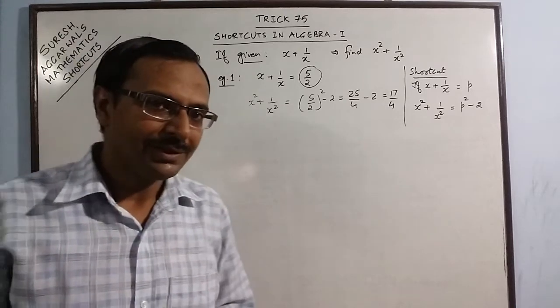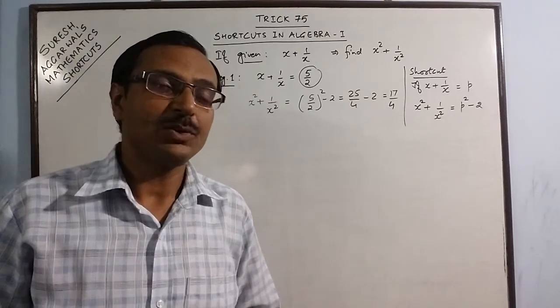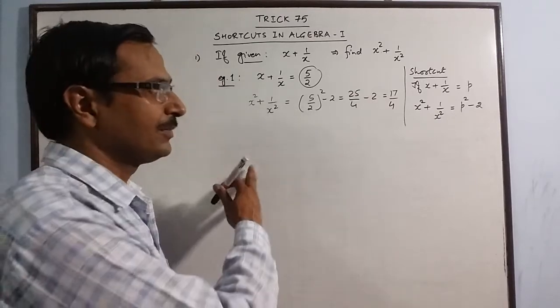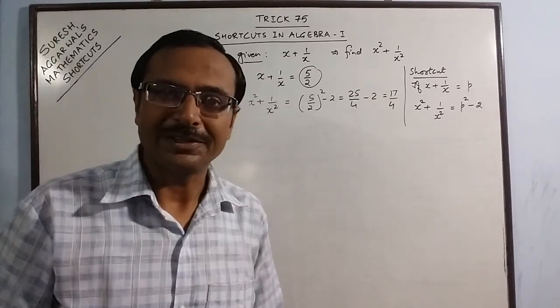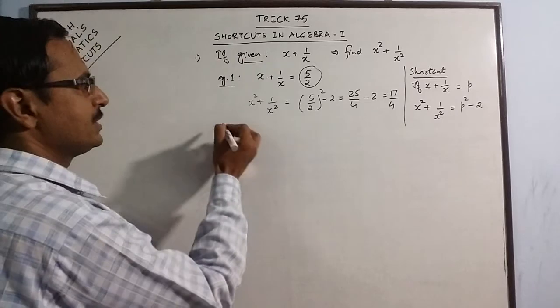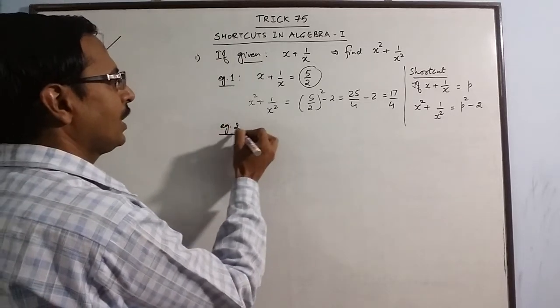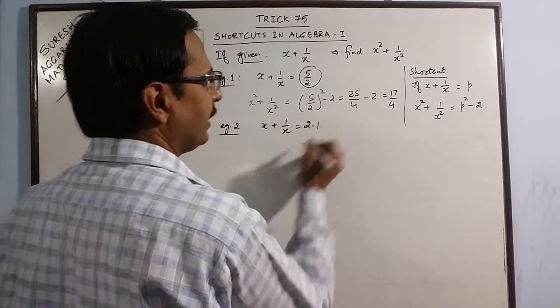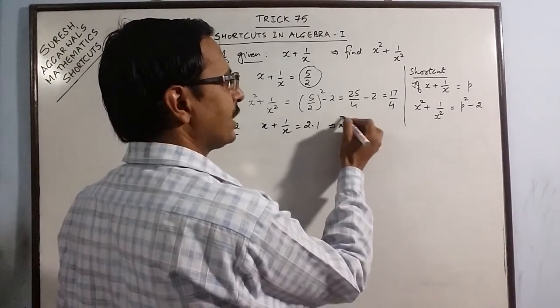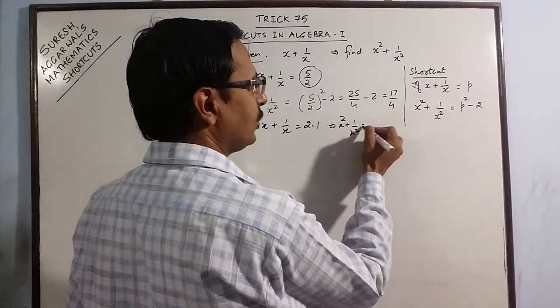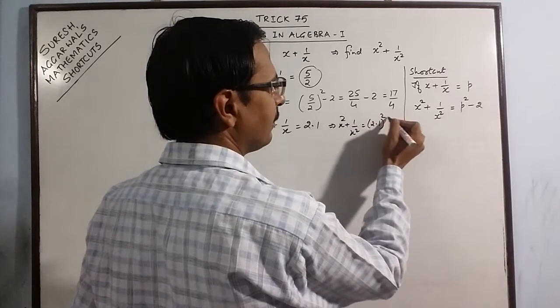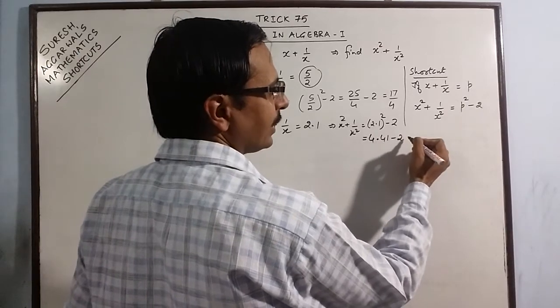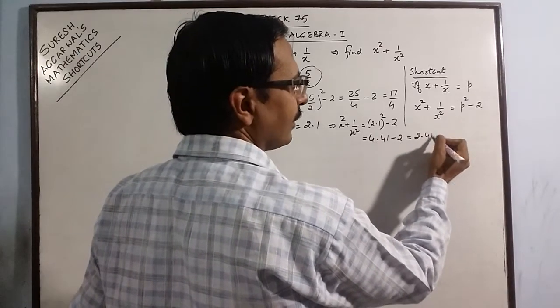Very simple indeed and saves you at least 30 seconds to solve this problem when you solve it by traditional method. Another example, say we have x plus 1 by x as 2.1. x squared plus 1 over x squared will be 2.1 square minus 2. This is 4.41 minus 2. The answer is 2.41.